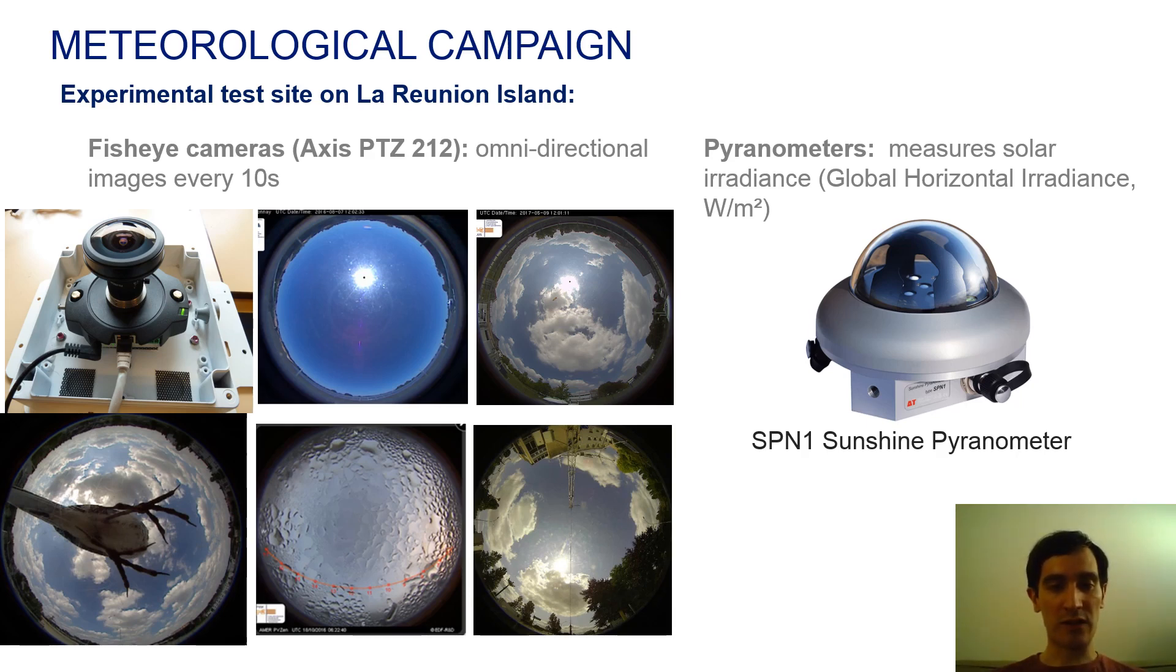The machine learning problem here consists in estimating and forecasting solar irradiance based on cameras only, since cameras are much cheaper than high-grade pyranometers.